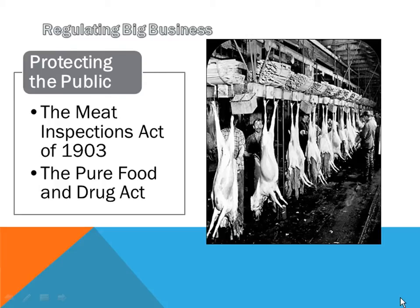They would put the cows into this vat of constantly boiling water. The meat, once it boils, falls off the bone and floats to the top. Here's our lead character with a spear, and his job was to spear it and put it on a conveyor belt.